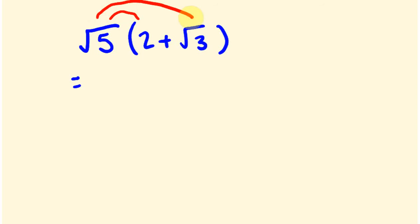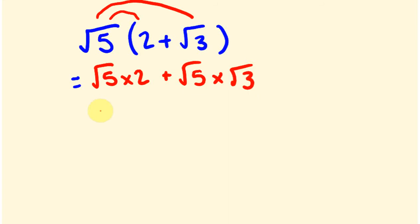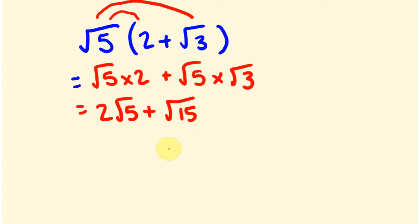We're just going to expand the brackets — multiplying the square root of 5 by each term inside. So this equals the square root of 5 times 2, plus the square root of 5 times the square root of 3. That gives us 2 times the square root of 5, plus the square root of 15, since the square root of 5 times the square root of 3 equals the square root of 15. We can't simplify this any further, so this is our answer.